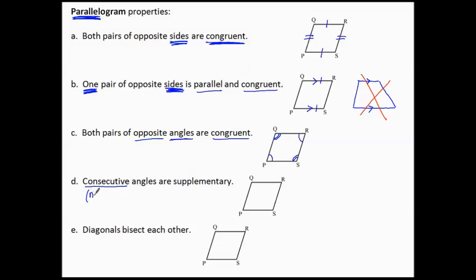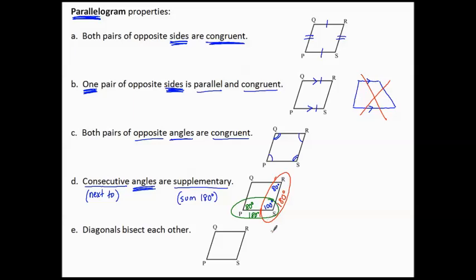Consecutive — meaning next to each other — consecutive angles are supplementary, which means their sum is 180 degrees. For example, if this angle is 100 degrees, the one next to it must be 80 degrees, so these two consecutive angles add up to 180 degrees. Next to in any direction: next to the 100-degree angle here must also be 80 degrees, because any two angles next to each other have to add up to 180 degrees.